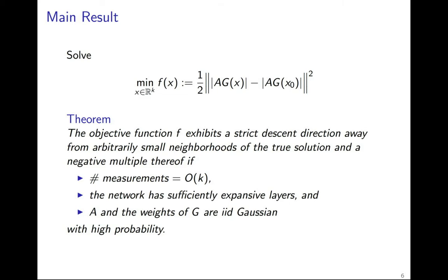if the number of measurements is order k, the neural network layers are sufficiently expansive, and the measurement matrix A and weights of G have IID Gaussian entries with high probability.